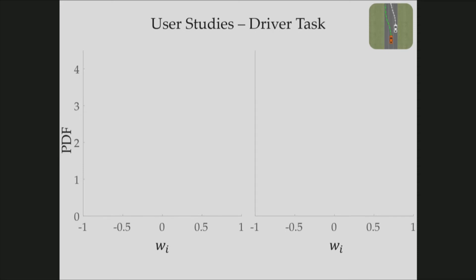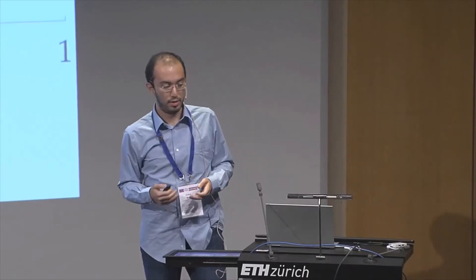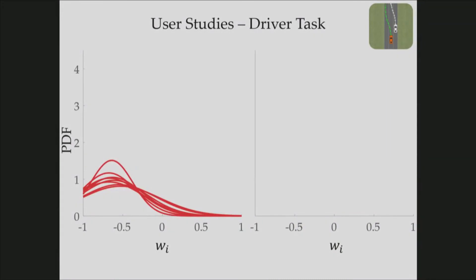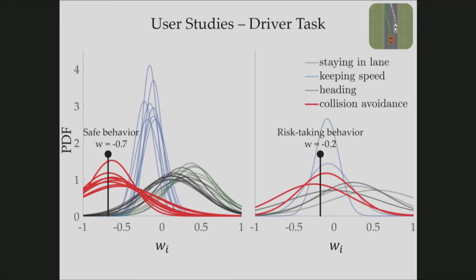And we did some user studies to assess the applicability of our algorithm. We recruited 10 users, and we asked them 150 pairwise comparisons on driver and tosser tasks. I will show the results of the driver task now. Here you can see one of the features. This is namely collision avoidance feature. It being close to minus one means people really care about avoiding collisions. It was interesting to see that two of the users took a more risk-taking approach. And this experiment showed us that we can use our framework to learn different human preferences.